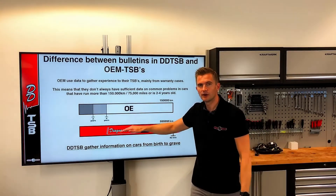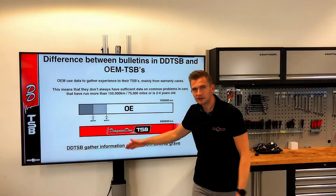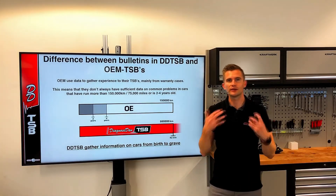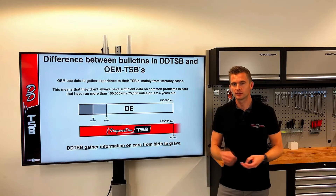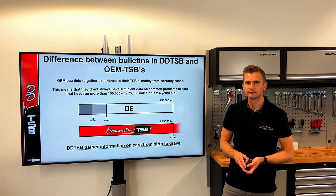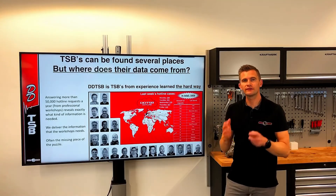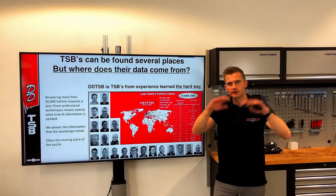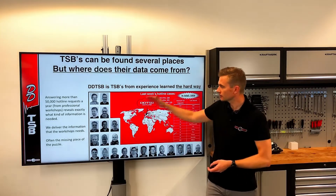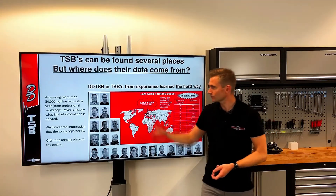This is the difference between OEM TSBs and the TSBs we have in DDTSB. We share information about whatever we see in the hotline, so this means it can be a car that is 20 years old, but it can also be a car that is one year old. We say that we cover the information on cars from birth to grave. The hotline that you have access to in DDTSB answers more than 50,000 cases a year, which gives us a clear picture when there's a common fault. When we see this, we make a TSB to take the load off the hotline — we have no intention of answering the same question when we already know the answer.